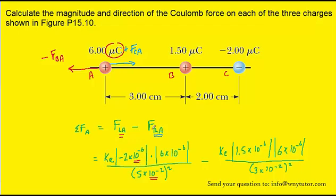The same idea is applied to FBA, although the distance is different in that case. We have the distance from A to B being only 3 centimeters, and therefore we've plugged that distance in here, again converting it into meters, and the charges were converted into coulombs.